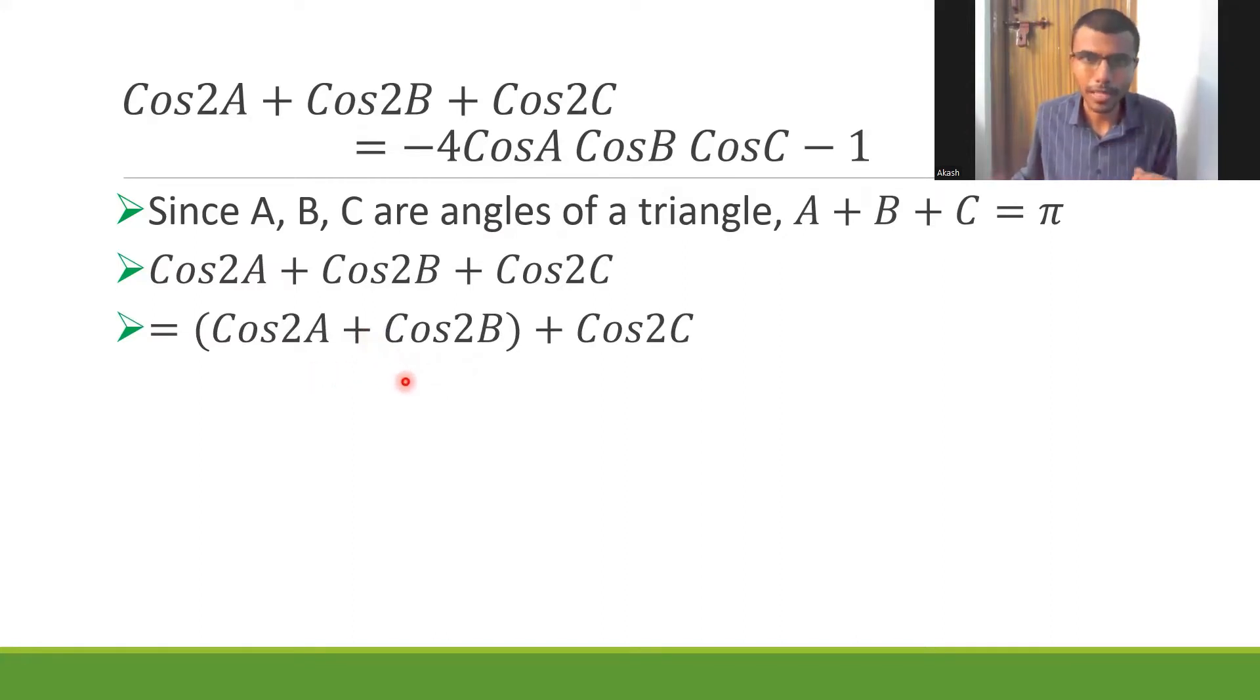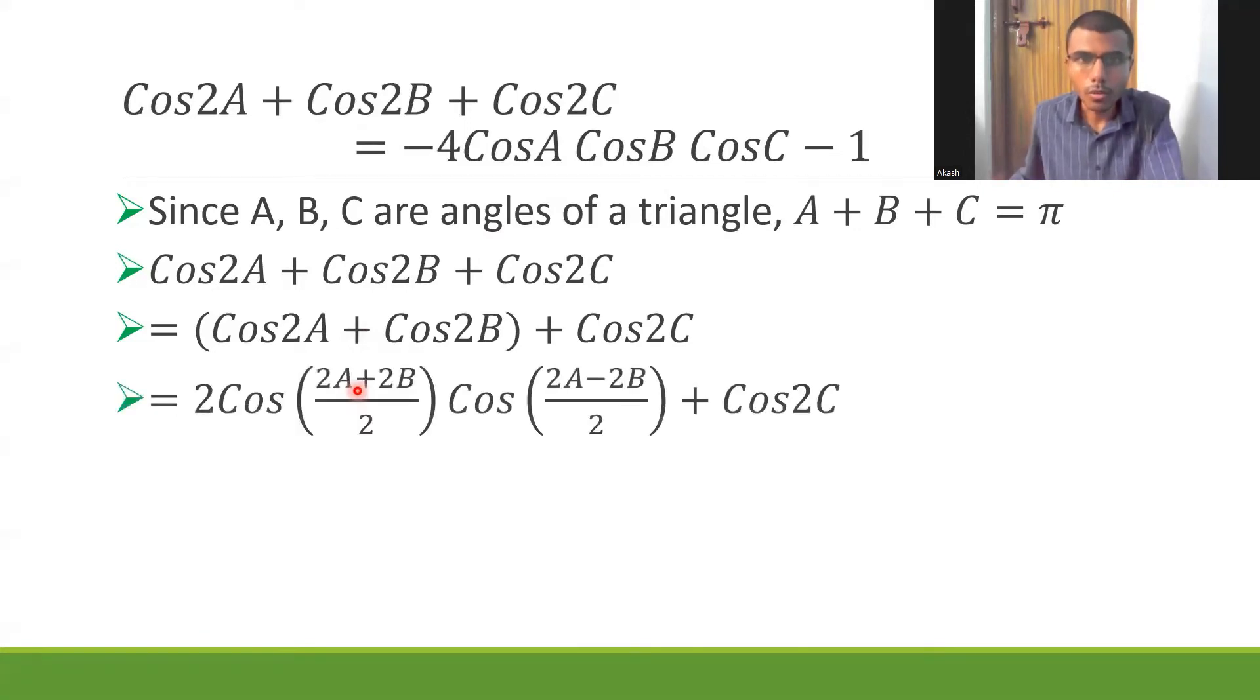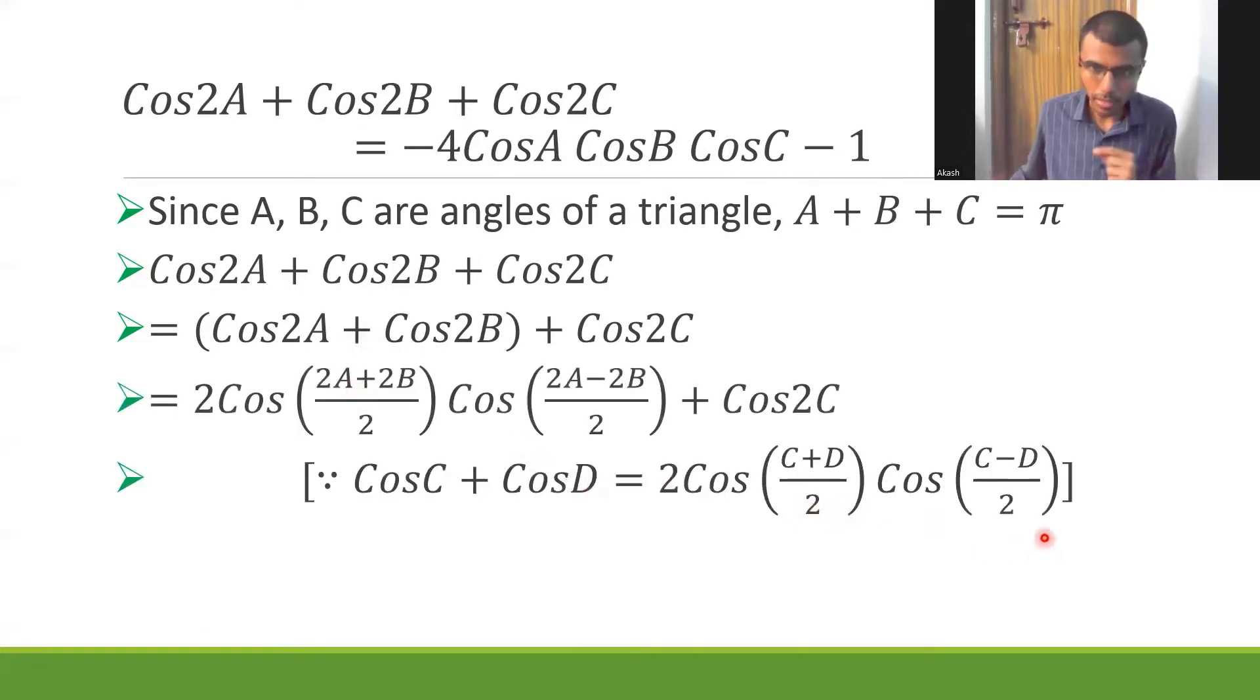It clearly shows that you're going to apply formula on these two terms. Now there is a formula known as cosC + cosD. CosC + cosD is 2cos(C+D)/2 cos(C-D)/2. So that's why cos2A + cos2B would be 2cos(2A+2B)/2 cos(2A-2B)/2 + cos2C.